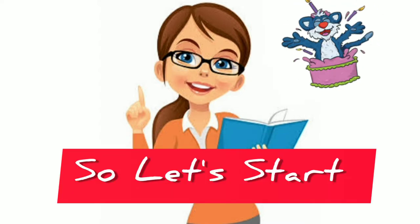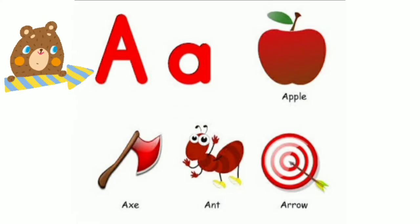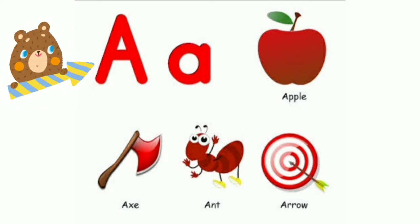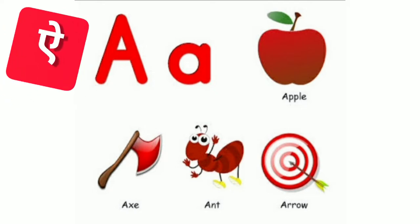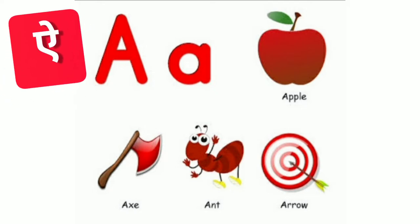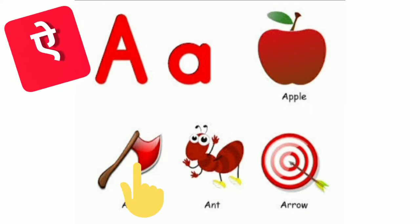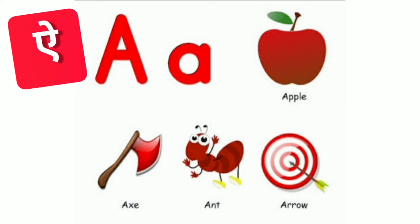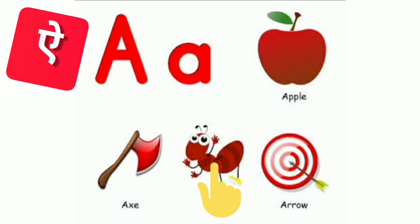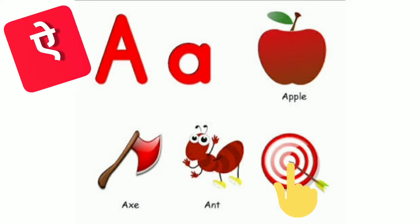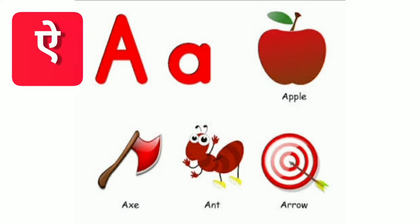So let's start. The first letter is A. The sound they say is A. Apple. Axe. Ant. Arrow. The sound is A.